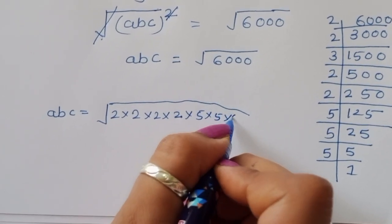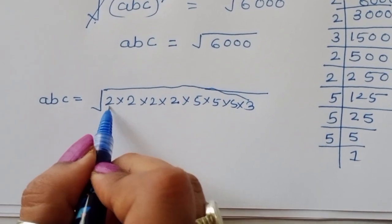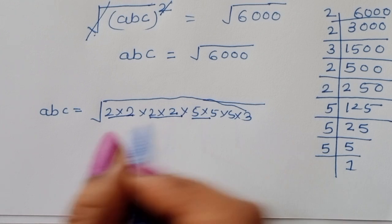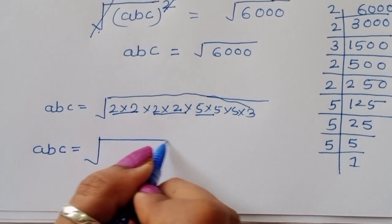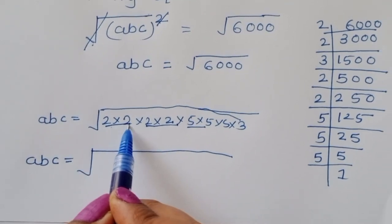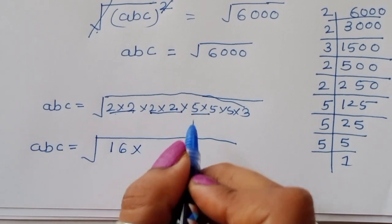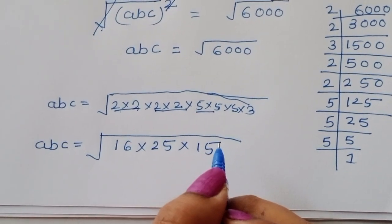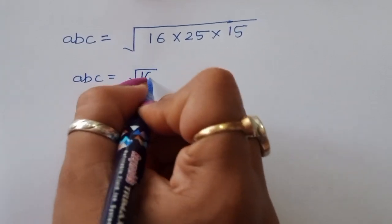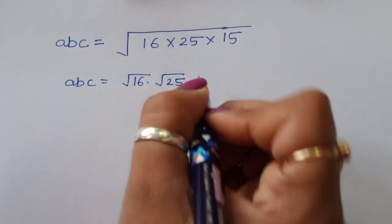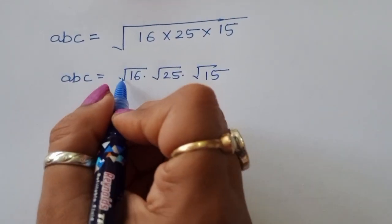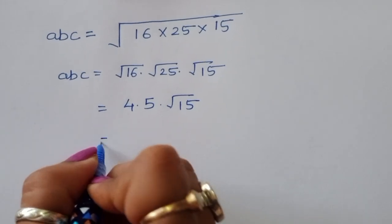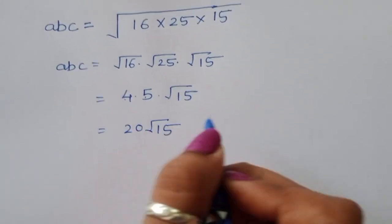So the value of ABC equals the square root of 2 times 2 times 2 times 2 times 5 times 5 times 5 times 3. We can separate this as square root of 16 times square root of 25 times square root of 15, which equals 4 times 5 times square root of 15, giving us 20 square root of 15.